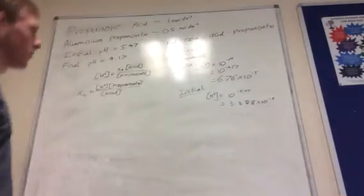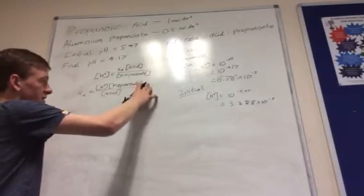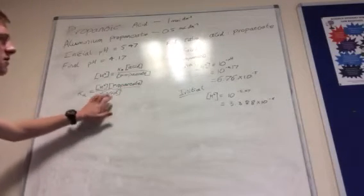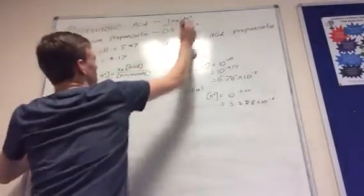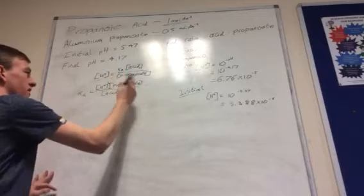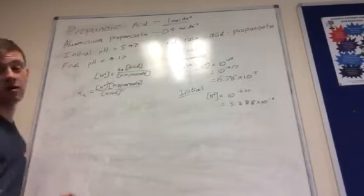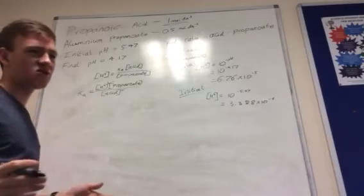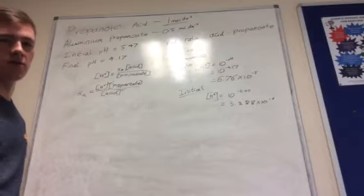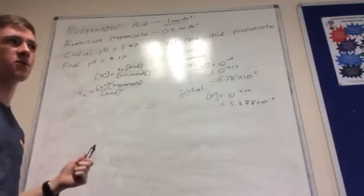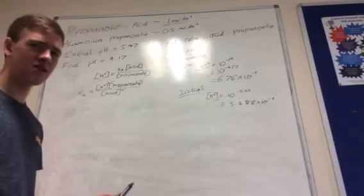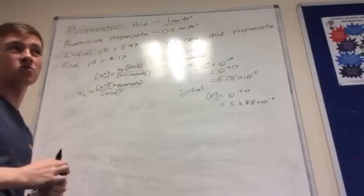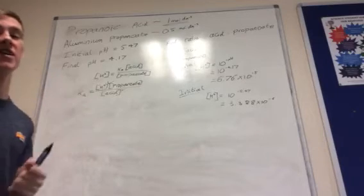We still need the concentration of the propanoate and the concentration of the acid. The concentration of the acid is given — it's 1 mol/dm³. So we actually know that. The only thing left is the propanoate. Propanoic acid is very weak — all carboxylic acids are — so very little will dissociate in water. Most of it stays as propanoic acid rather than dissociating to form propanoate ions and H⁺. So we can effectively ignore that contribution. We can work out the propanoate concentration from the aluminium propanoate, which is a salt and will completely dissociate in water, giving aluminium ions and propanoate ions.